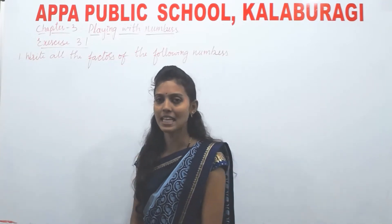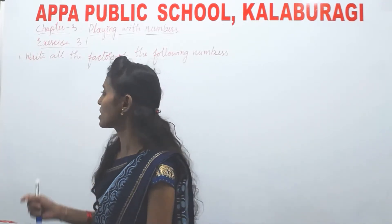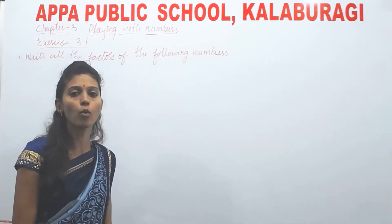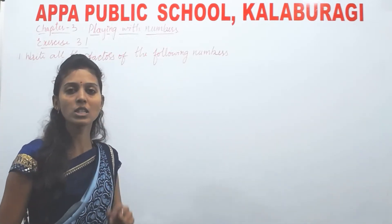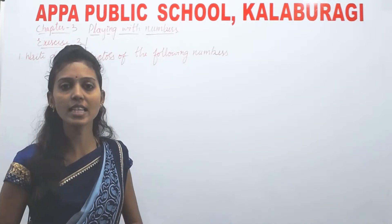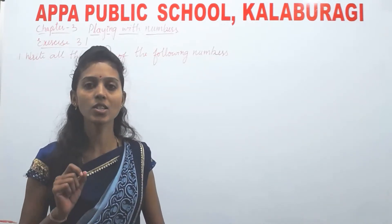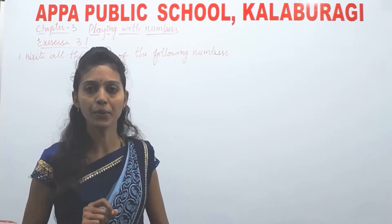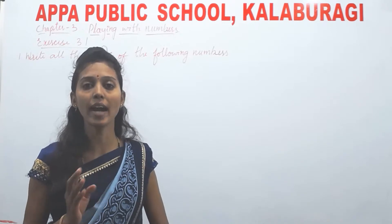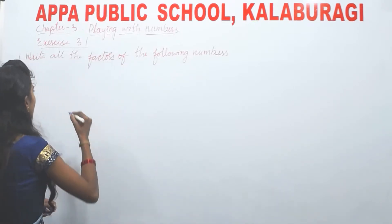The first question says: write all the factors of the following numbers. What is a factor? A factor is nothing but a divisor of the given number — which numbers will divide it.